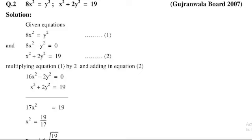The equations are: equation 1 is 8x² = y², and equation 2 is x² + 2y² = 19. Rearranging the terms: x² + 2y² = 19, and equation 1 becomes 8x² − y² = 0.